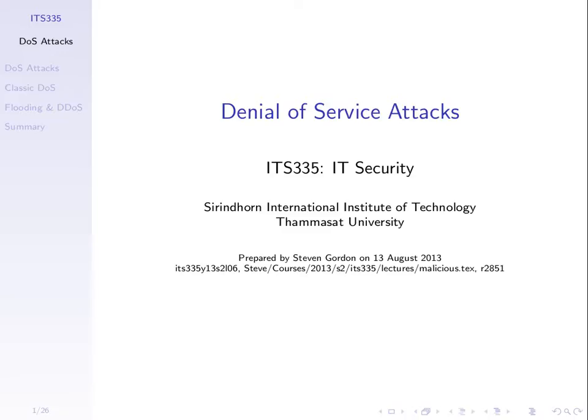We have a computer system — a set of computers, a single computer, or a network — that has some purpose. There is a set of users that use that to achieve their goal. Availability is making sure that the computer system is available for those normal users. If it's unavailable, then that's an attack on the security of that computer system. We're going to look at denial of service attacks, which deny the availability of the computer system and deny service to the normal users.